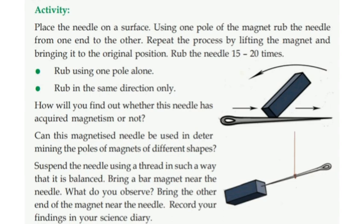How will you find out whether this needle has acquired magnetism or not? Can this magnetized needle be used in determining the force of magnets of different shapes? Yes, this can be used. Suspend the needle using a thread in such a way that it is balanced. Bring a bar magnet near the needle. What do you observe? Bring the other end of the magnet near the needle. Record your findings in your science diary. Can you find out the polarity of the magnetized needle?